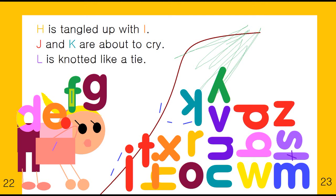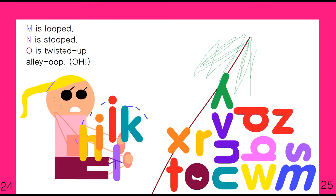H is tangled up with I. J and K are about to cry. L is knotted like a tie. M is looped, N is stooped, O is twisted alley-oop.